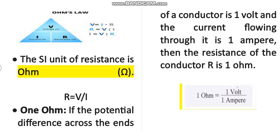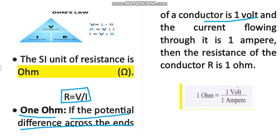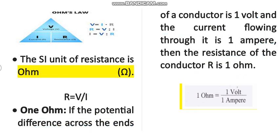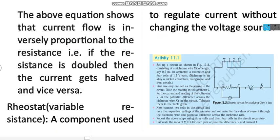The SI unit of resistance is Ohm. We have learned that R equals V divided by I. So 1 Ohm is defined as: if the potential difference across the ends of a conductor is 1 Volt and the current flow is 1 Ampere, then the resistance of the conductor is 1 Ohm. It is written as 1 Ohm = 1V / 1A.